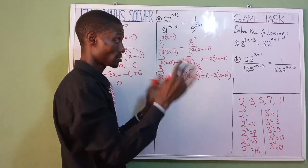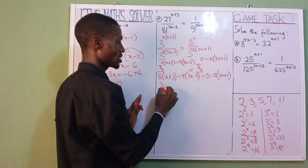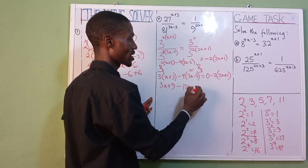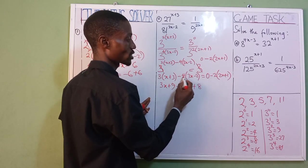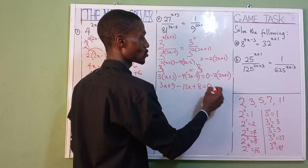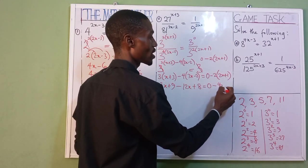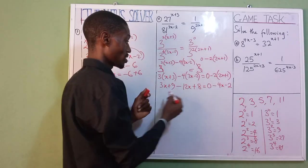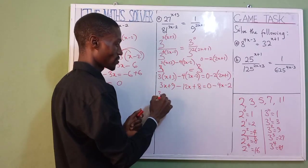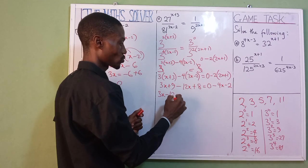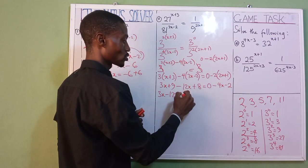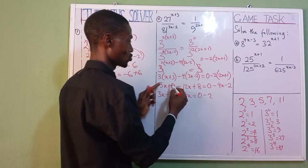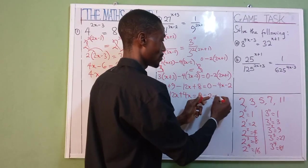3 cancels 3. So let's write the remainder: 3 into bracket (x plus 3) minus 4 into bracket (3x minus 2) equals 0 minus 2(2x plus 1). Let's open our brackets. 3x plus 9 minus 12x plus 8 equals 0 minus 4x minus 2.